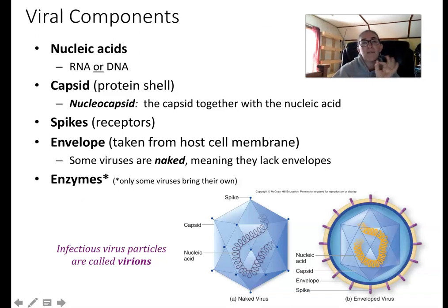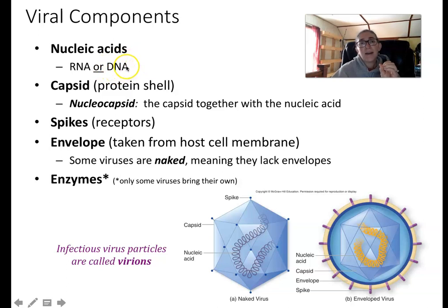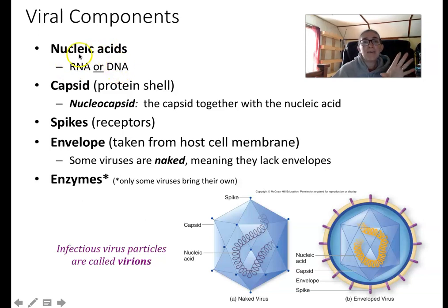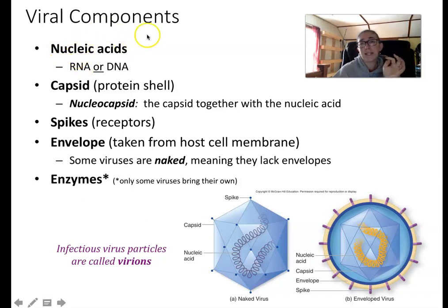All viruses must have genetic material — nucleic acids. Cells always have DNA genomes, but viruses can have either a DNA genome or an RNA genome as their only nucleic acid. Viruses are unique in that they cannot have both — they never have both. Cells have a DNA genome and use RNA to make temporary copies, but viruses have either RNA or DNA, not both.